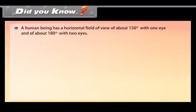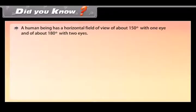Did you know: A human being has a horizontal field of view of about 150 degrees with one eye and about 180 degrees with two eyes.